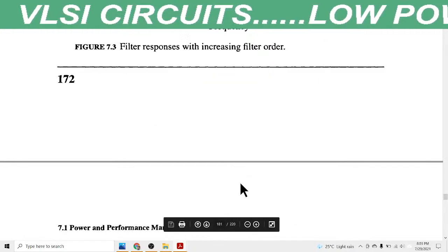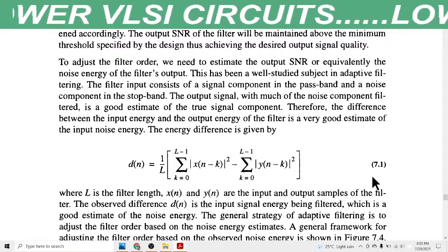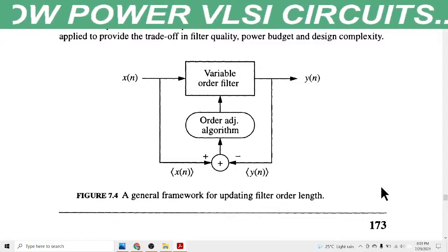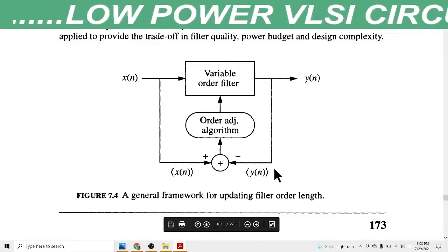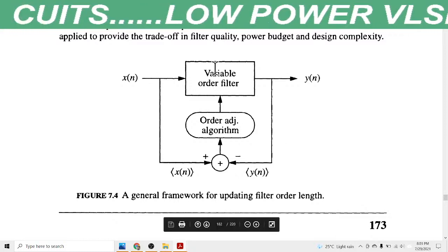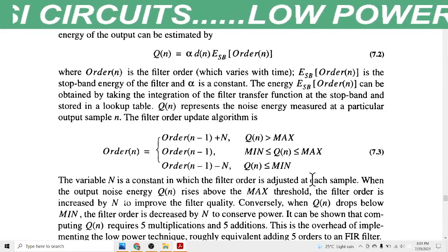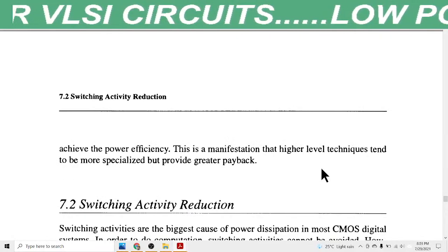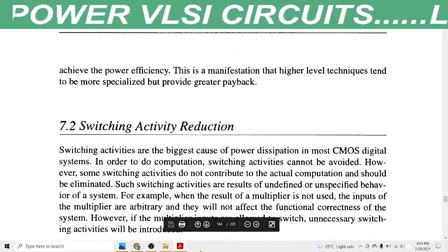This is all about performance management in any circuit. This equation is for digital filters, and this diagram represents the framework of updating filter order length according to requirement — we vary the order of the filter. In the next lecture we will discuss switching activity reduction. Thank you.